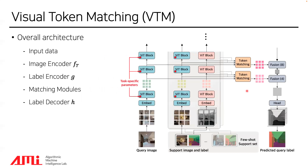This figure shows the overall architecture of Visual Token Matching, proposed in this paper. Visual Token Matching is composed of input data, an image encoder, a label encoder, a matching module, and a label decoder. I will explain each component in the following slides.